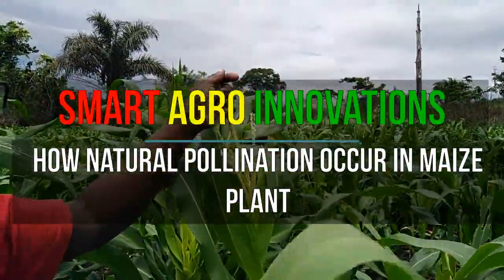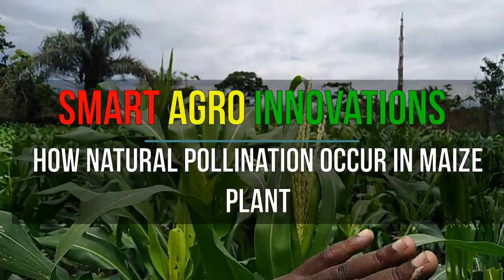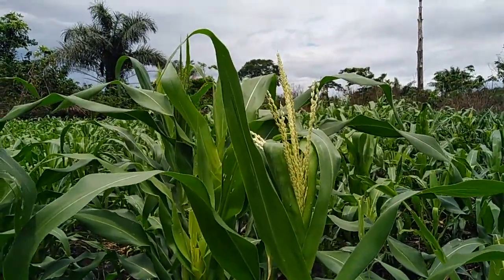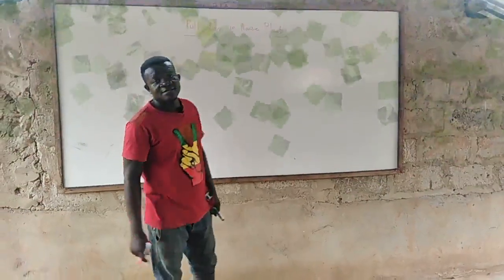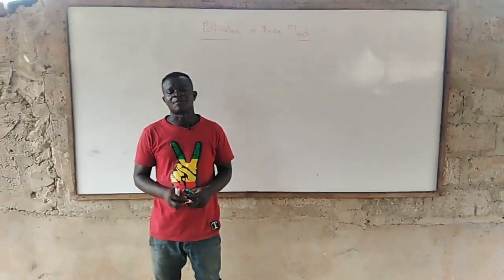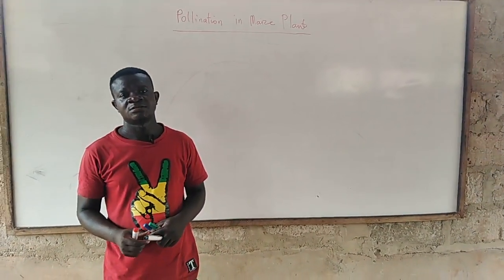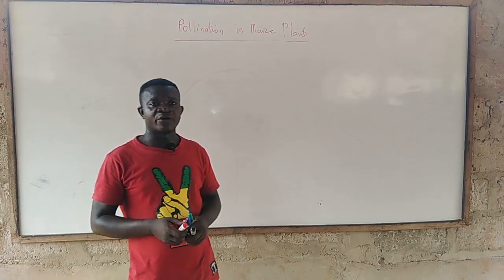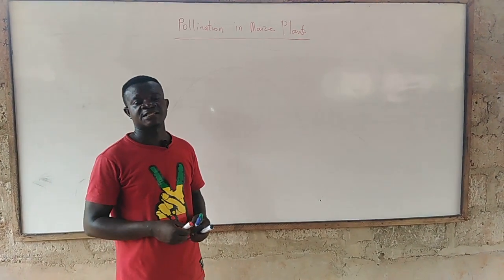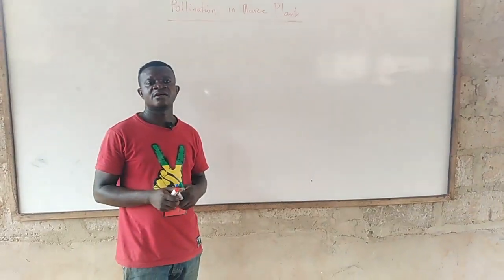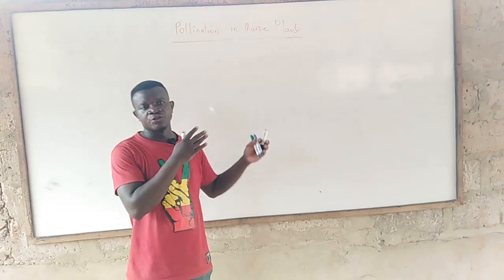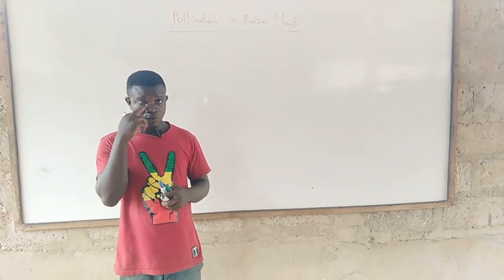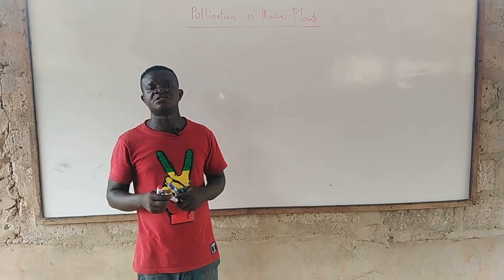Welcome once again to Smart Agro Innovation, your platform that will aid you in developing agriculture through simple innovative ideas. Today we are going to talk about pollination in maize plants — how pollination occurs in maize production. We shall take you through a short discussion and after that we move you to the field for practical observation on how natural pollination occurs in maize.